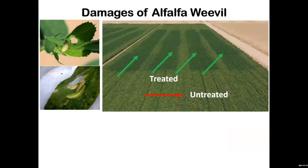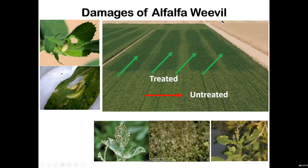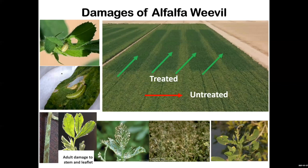This insect can do a lot of damage, mainly by feeding on the leaflets of alfalfa. You can see in our trials the difference between plants protected from insect damage and those that are not. Feeding is mostly from the larval stage, though adults can also feed a little on the stem and leaflet before inserting eggs — which can be a sign that you have this problem in the field.